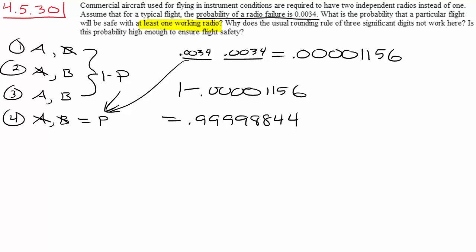And that's it. Now the next question they ask is why does the usual rounding rule of three significant digits not work here? Because for this question they want us to round to six.